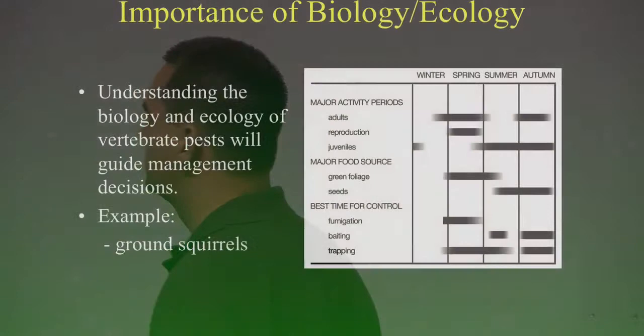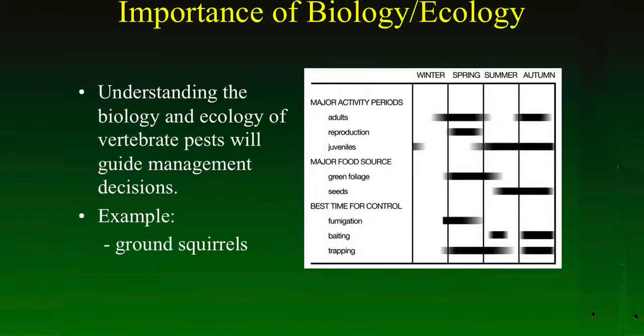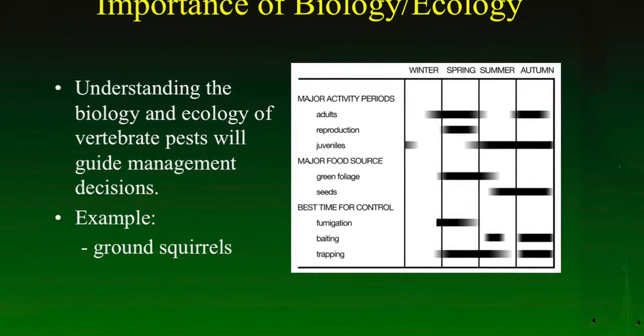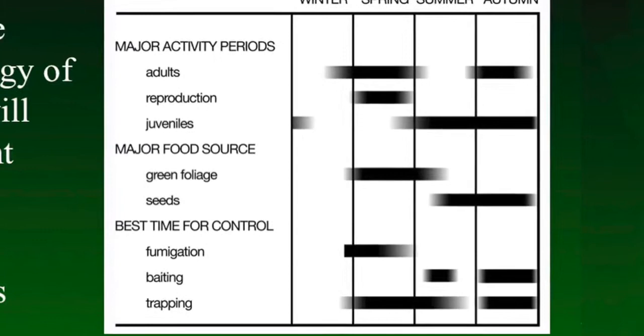It's also important to understand a little bit about the biology of the species that you're working with as well as the ecology of the system that you're working in as that will greatly increase the efficacy of your management programs as well. This chart here is one that we're going to see several times today because I think it has a tremendous amount of useful information on it. This chart is designed specifically for the California ground squirrel. And what we see on this chart are major activity periods, major food sources, and the best time for control for three of the more commonly used techniques for managing ground squirrels. So what's this chart telling us? Well one of the first things I notice when I look at this chart is the major food sources. And I see that in springtime ground squirrels are eating primarily green foliage. Why is this important? Well it's important because the baits that we use to control ground squirrels are in fact seed or pelletized type baits. But we see that they're not eating baits or seeds until later in the year. So if we want to use baiting as a control technique for ground squirrels we're much better off waiting until later in the year when ground squirrels switch over to eating seeds naturally.